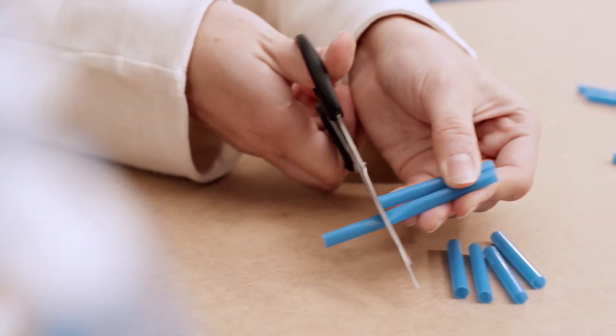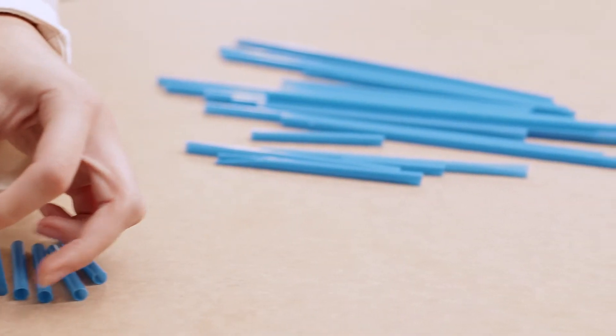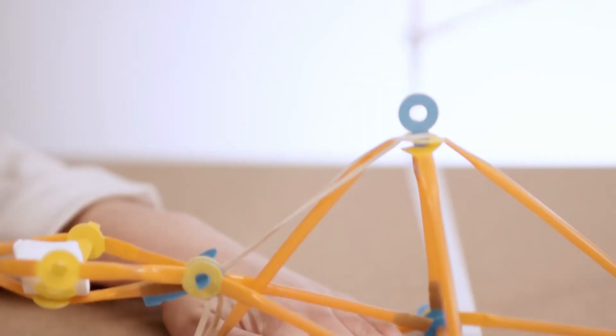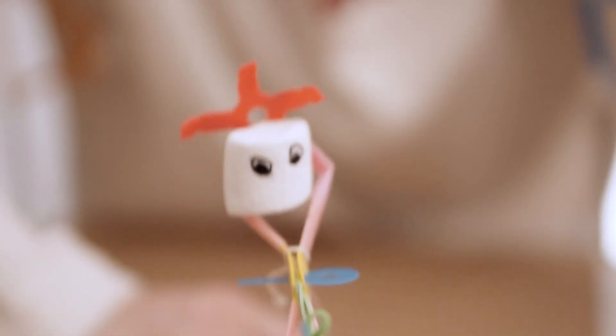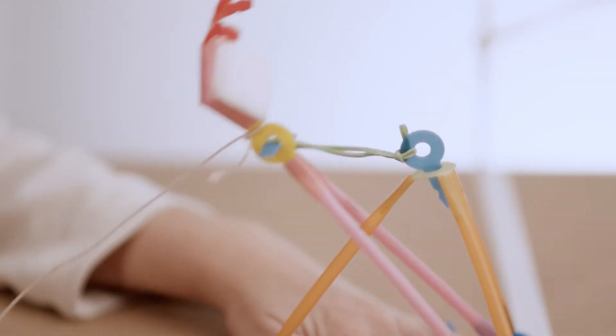of the catapults and trebuchets out of Strawbees and straws. Create the launching beam with a Strawbee bucket to hold the projectile in place. Use a rubber band on the catapults to create a spring, making sure they're always